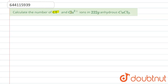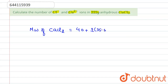The question is: calculate the number of Cl⁻ and Ca²⁺ ions in 222 grams of CaCl₂. First, we find the molecular weight of CaCl₂, which equals 40 plus 2 × 35.5, giving us 111 grams.